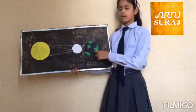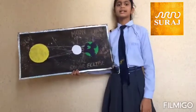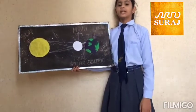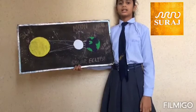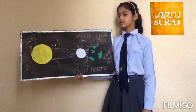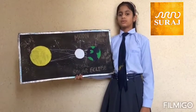When the sun, the moon and the earth are in a straight line, and when the moon blocks sunlight reaching the earth and casting a shadow on it, this is known as solar eclipse.